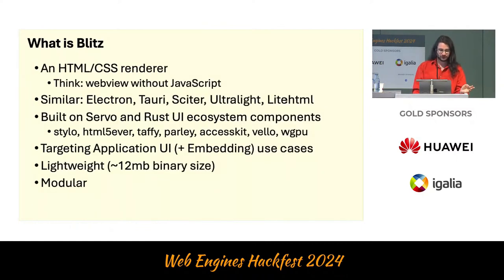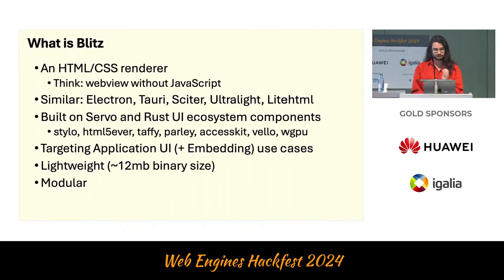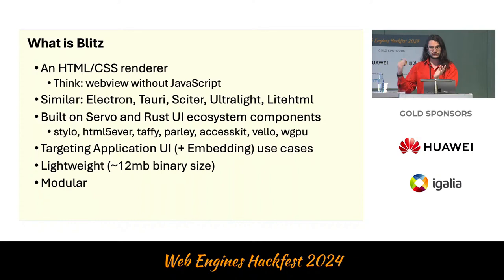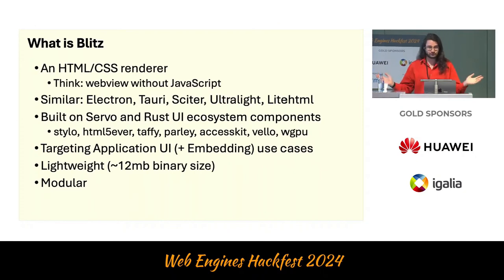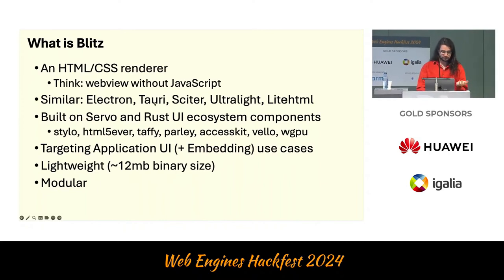Now, Blitz is an HTML and CSS renderer. It's basically a web view or web engine, but it does not have a JavaScript engine. The idea is that you can combine it with Dioxus or some other scripting engine in Rust, and then completely bypass JavaScript, which is obviously more efficient and saves on binary size. This is targeting the application UI space — kind of like Electron. It could potentially be used to build a full browser, but that's not really the use case. If you want a browser, you just use Servo, which shares some of the components.